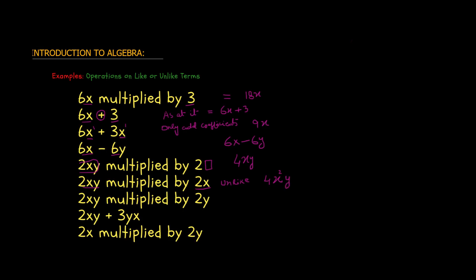Now 2xy multiplied by 2y. Unlike terms again — only one letter in the second term, two letters in the first. 2 multiplied by 2 is 4. There is no x in the second term so we keep only one x from the first. There is one y in the second term and one y in the first; y multiplied by y is y squared. So the answer is 4xy².